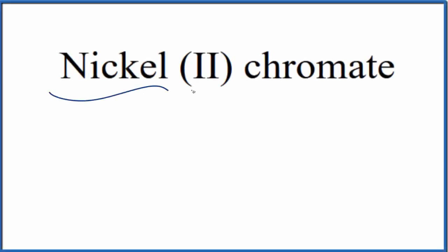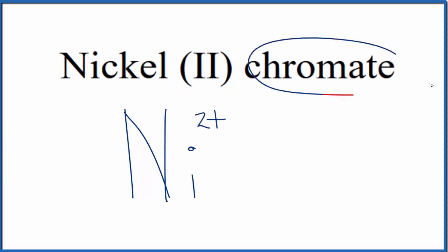To write the formula for nickel(II) chromate, let's first write the element symbol for nickel. That's just Ni. In this Roman numeral two here in parentheses, that tells us the nickel is 2+.